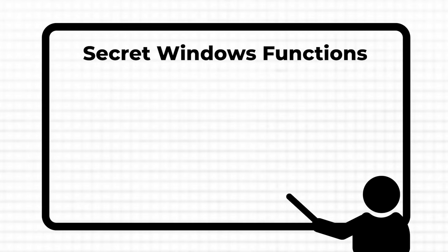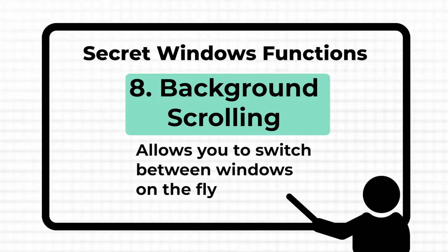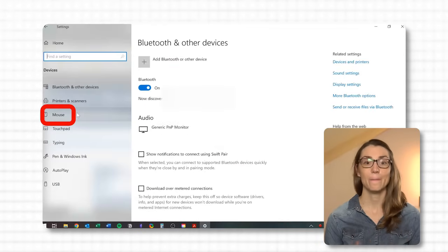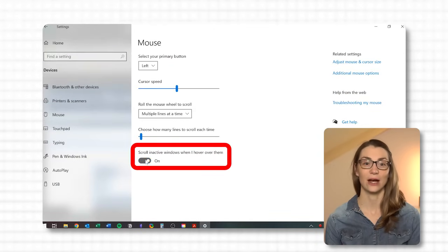Regardless of whether you're using Steps Recorder or just working on a project, most likely you will have several windows open. Sometimes they overlap and you need to move one to the background or foreground. But even if a window is in the background, you might still want to scroll through it to read or extract information — particularly handy when comparing data across documents or keeping an eye on live updates. This can be done by enabling Windows background scrolling. Go to Settings, Devices, Mouse and activate the option to scroll in inactive windows when you hover over them.